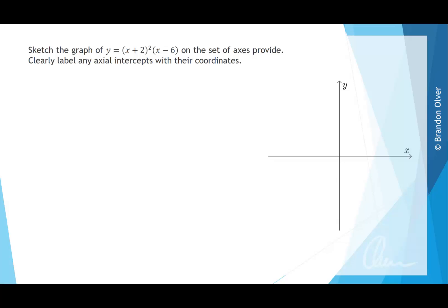Sketch the graph of y = (x+2)²(x-6) on the set of axes provided. Clearly label any axial intercepts with their coordinates.